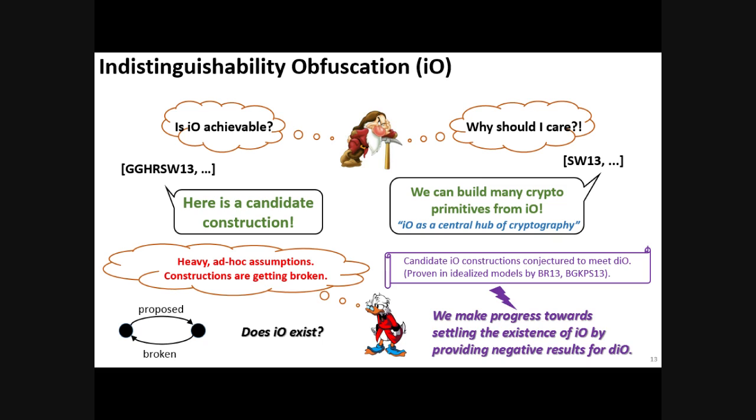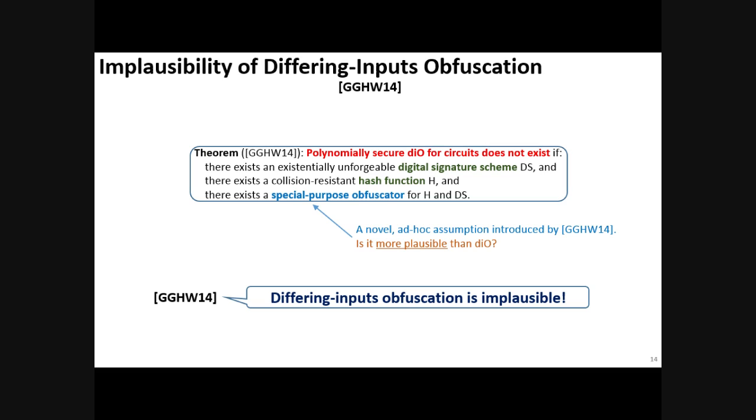or conjectures to meet DIO and even proven in idealized models. In this work, we provide some negative results for differing input obfuscation, and one could look at it as making progress towards settling the existence of indistinguishability obfuscation.